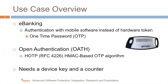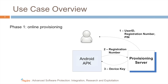The first phase concerns online provisioning. What happens here is that the user launches the application and inputs some credentials that he got offline. Part of the credentials are then sent by the app to a provisioning server, and the server sends back the key. At that point, the application stores the key persistently, and the server share a common secret so they can replay the one-time password generation independently.